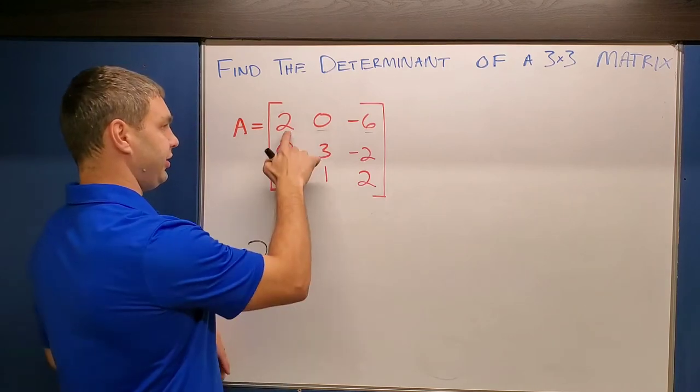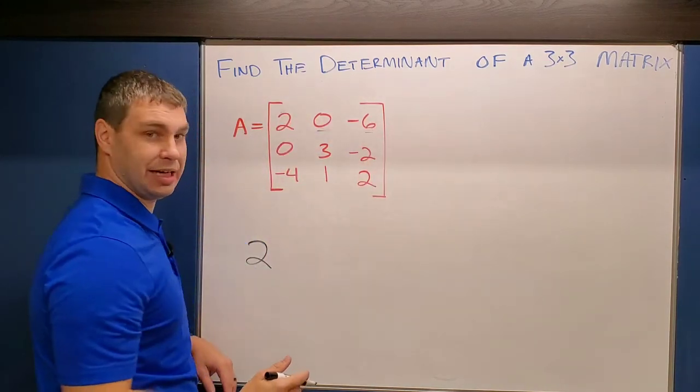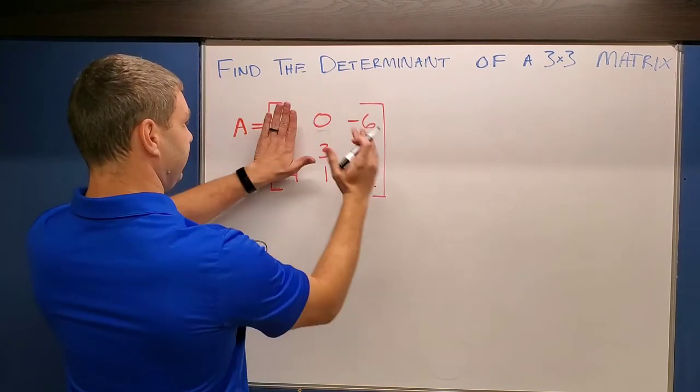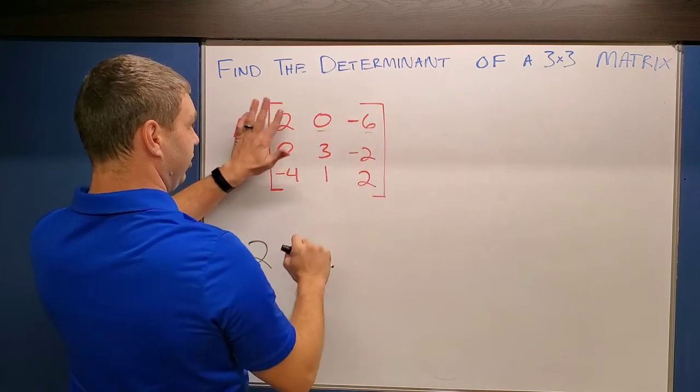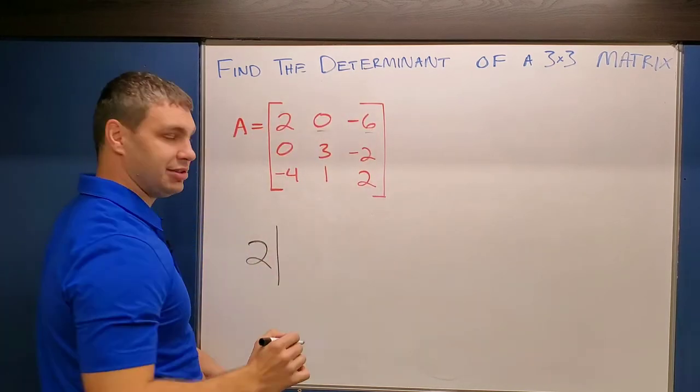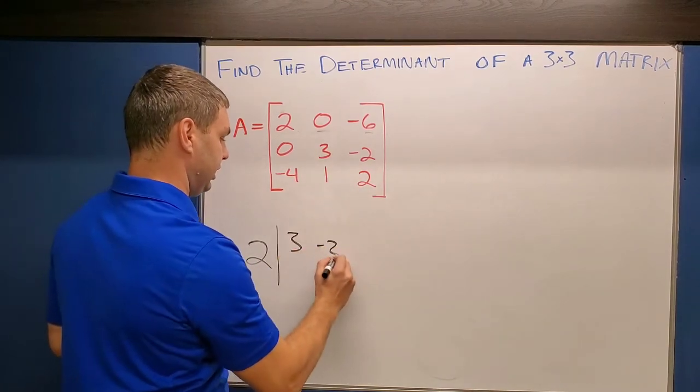If I start with the two, I'm going to cancel out its column and its row that it's in. I'm going to write the determinant, the two by two determinant of what's left over. So if this is gone and this is gone, the row and column with that two, what I have left over are these four down here. So I need to find the determinant of three, negative two, one, two.